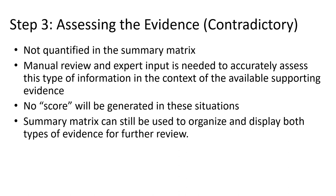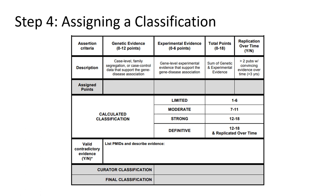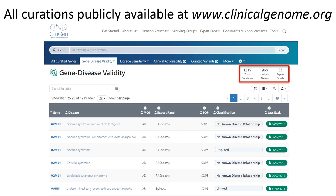What if there is evidence contradicting a gene's role in disease? Contradictory evidence is not quantified in the summary matrix, as it's often context dependent and difficult to generalize. Manual review and expert input is needed to accurately assess this type of information in the context of the available supporting evidence, in particular to determine whether this is enough to classify the gene disease pair as either disputed or refuted. Once all of this information has been collected and evaluated, our scoring matrix can be used to arrive at a preliminary classification. Within ClinGen, once a preliminary classification has been obtained by the curator, it's reviewed with the rest of the GCEP prior to approval, and after a gene curation has been approved, it's posted to our website for public use.